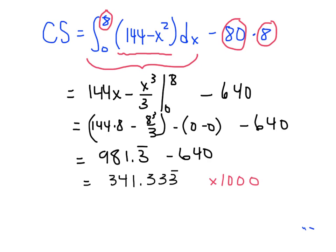And when we do that, we get a consumer surplus of $341,333. This is a comma here. So the consumer surplus, you know, it works out to be $341,333. Now let's go and we'll take a look at the producer's surplus.